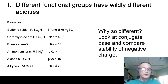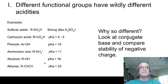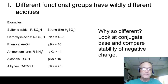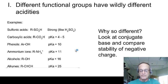Remember what a pKa of 25 means? It means the equilibrium constant for the reaction of an alkyne with water is roughly 1 times 10 to the negative 25th power — very, very weak, but still strong enough to react with some bases.